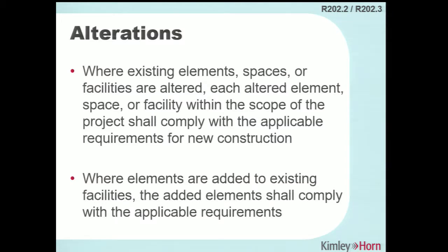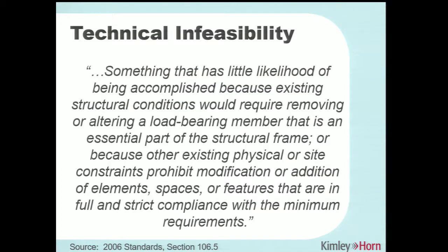Anywhere you are altering that path of travel, you have to include it in your project scope. For example, if you're at a signalized intersection adding pedestrian push buttons, you must create an accessible path of travel to reach that push button — including the clear space and any sidewalk or curb ramps necessary to access it.